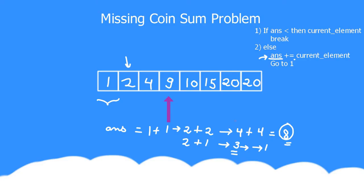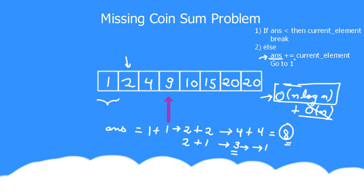Since we are sorting the array, the time complexity of sorting is O(n log n) where n is the number of elements. Then we loop over the elements, which has time complexity O(n). The dominant term is O(n log n), so the overall time complexity is O(n log n). I hope you understood the solution and I will see you in the next video. Thank you.